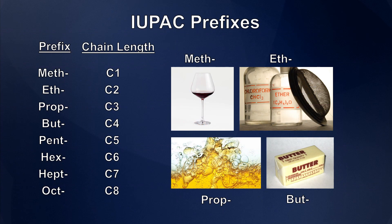The origin of those first four prefixes: meth comes from a Greek word meaning wine; eth from ether, one of the first two-carbon compounds ever discovered; prop from propionic acid, the first water-immiscible fatty acid; and but is actually from butter, because one of the first well-characterized four-carbon compounds was butyric acid, extracted from rancid butter.